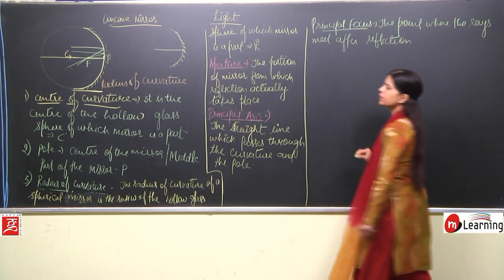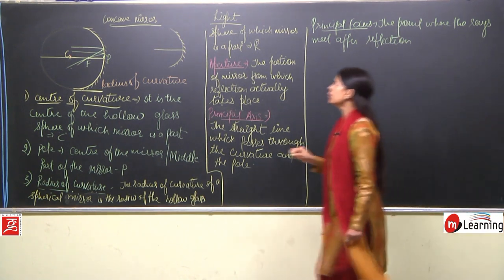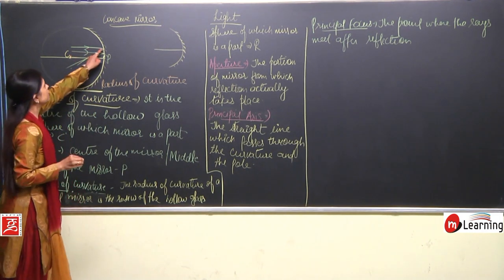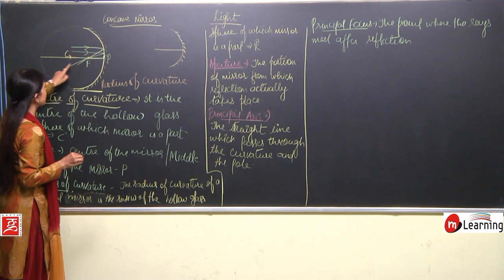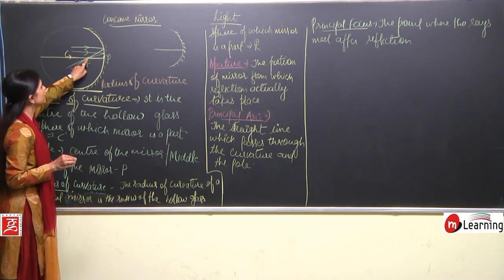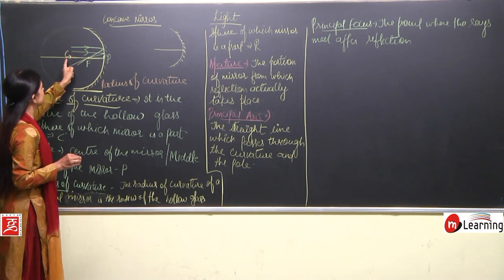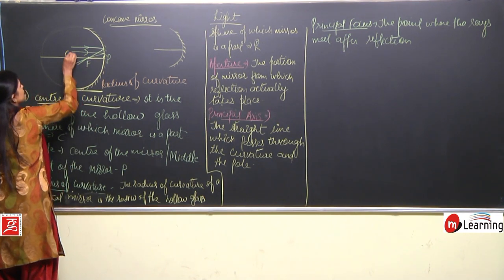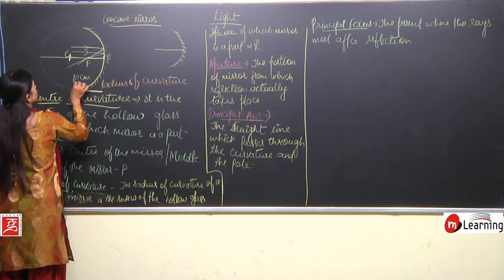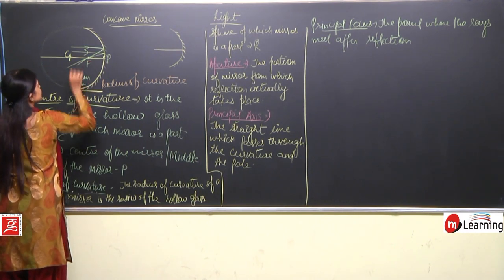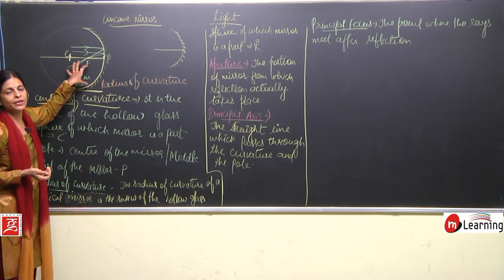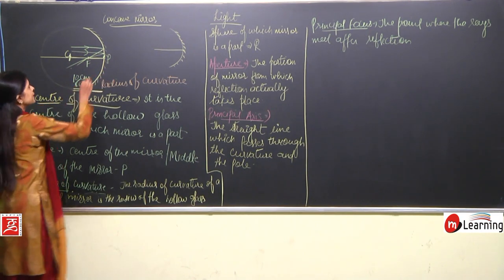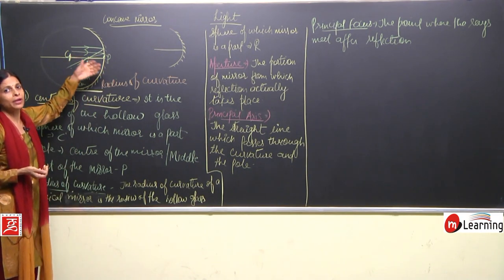In the concave mirror, when the ray of light travels parallel to the principal axis, it gets reflected and all these rays meet at a point known as focus. The focus is at half the distance of the center of curvature — so if the center of curvature is at 10 cm, focus will be at 5 cm. Therefore C equals 2F.